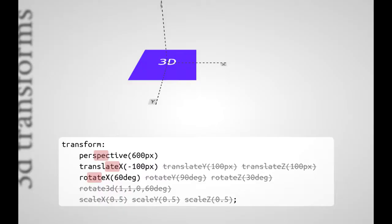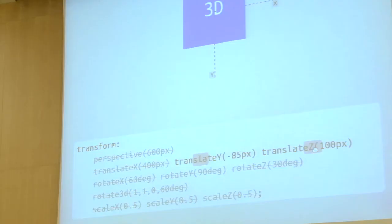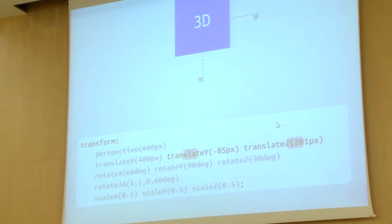Let's leave this boring 2D to the past. The future is today and we have 3D transforms. With 3D transforms, all we get is a couple of new transform functions. We still have translateX and translateY, and what is introduced is the third axis — the Z axis goes from the element into your eyes, orthogonal to the screen. So if we move this element forward by 100 or 200 pixels, it should actually be closer to us.